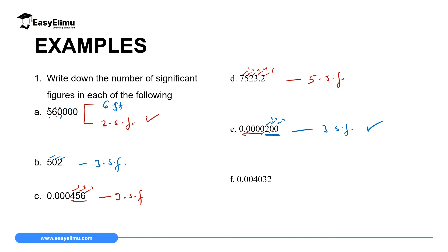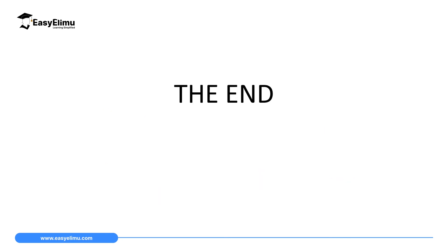Number F: 0.004032. The zeros at the left are not significant. The zero between 4 and 3 is significant because it occurs between non-zero digits. So we have four significant figures: 4, 0, 3, and 2. That marks the end of our lesson today. In the next lesson, we will discuss standard form.